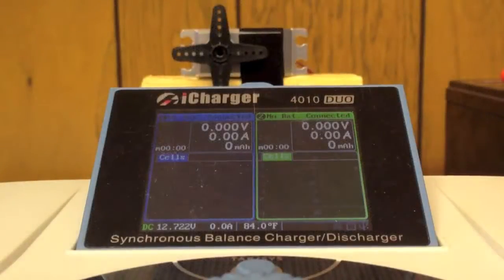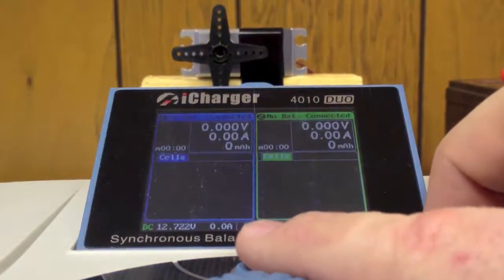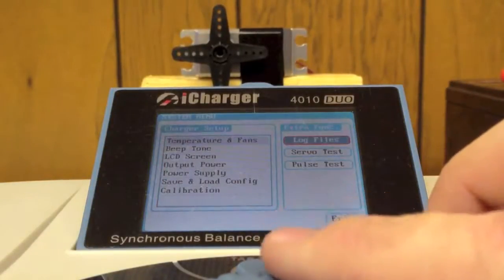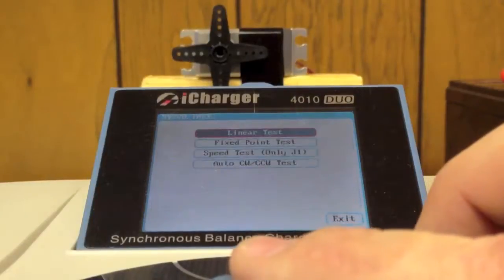Alright, I've got a servo set up behind the screen on the charger here so we can watch that servo horn move on this servo. We're going to do a couple things here. We're going to go into some of our extra features on this charger and we're going to scroll over to servo test. First I'll show you the linear test.